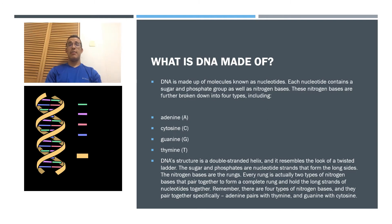What is DNA made of? DNA is made of molecules known as nucleotides. Each nucleotide contains a sugar and phosphate group, as well as nitrogen bases. These nitrogen bases are further broken down into four types: adenine, cytosine, guanine, and thymine. DNA's structure is a double-stranded helix, resembling a twisted ladder. The sugar and phosphate form the long sides, while the nitrogen bases are the rungs.